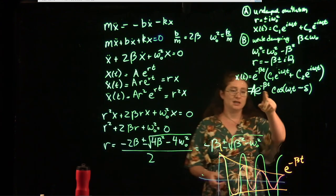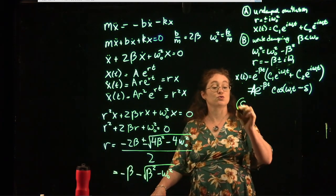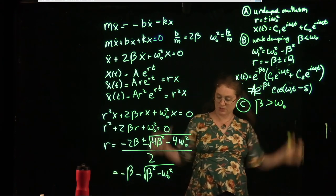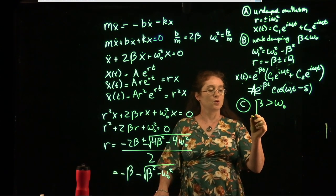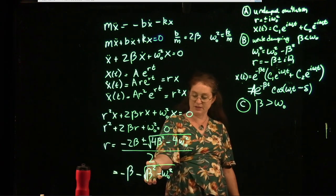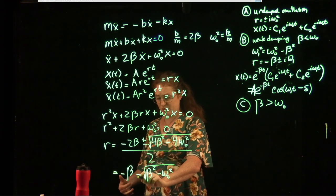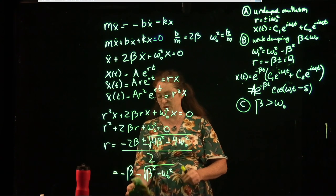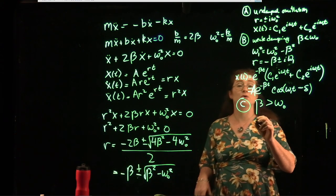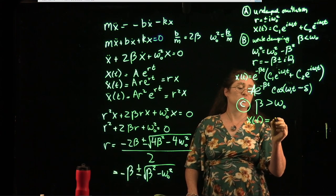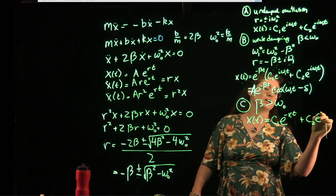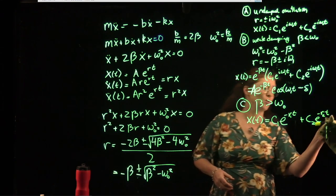For strong damping, beta is greater than omega-naught. In this case the square root term is real and both values of r are negative, so x(t) equals c1 e to the negative r1 t plus c2 e to the negative r2 t — either way it's a form of exponential decay with no oscillation.